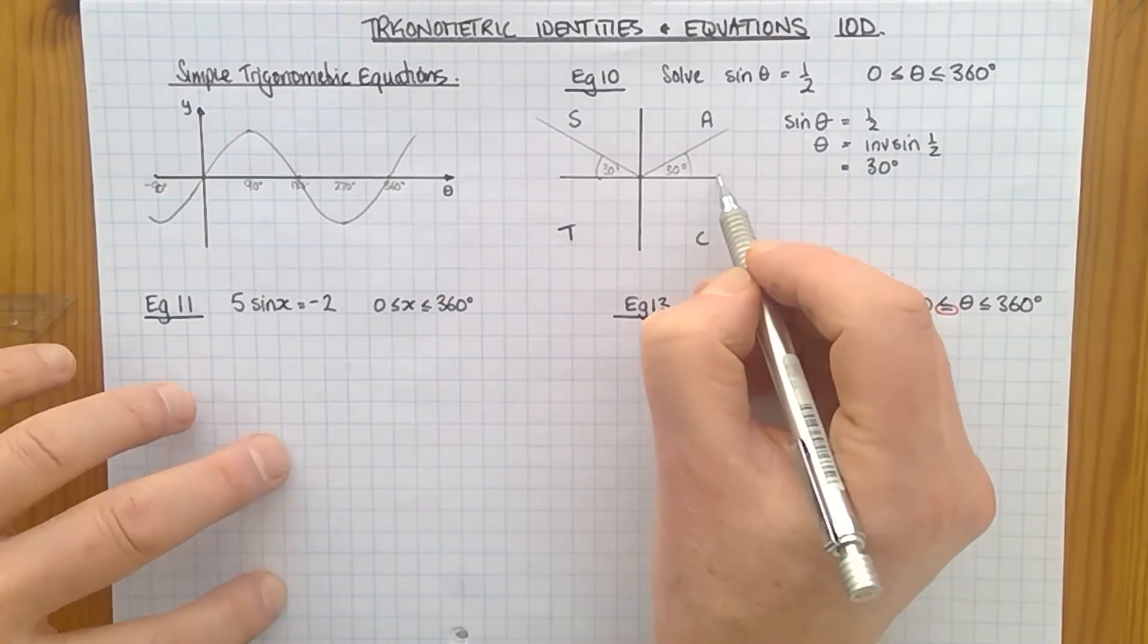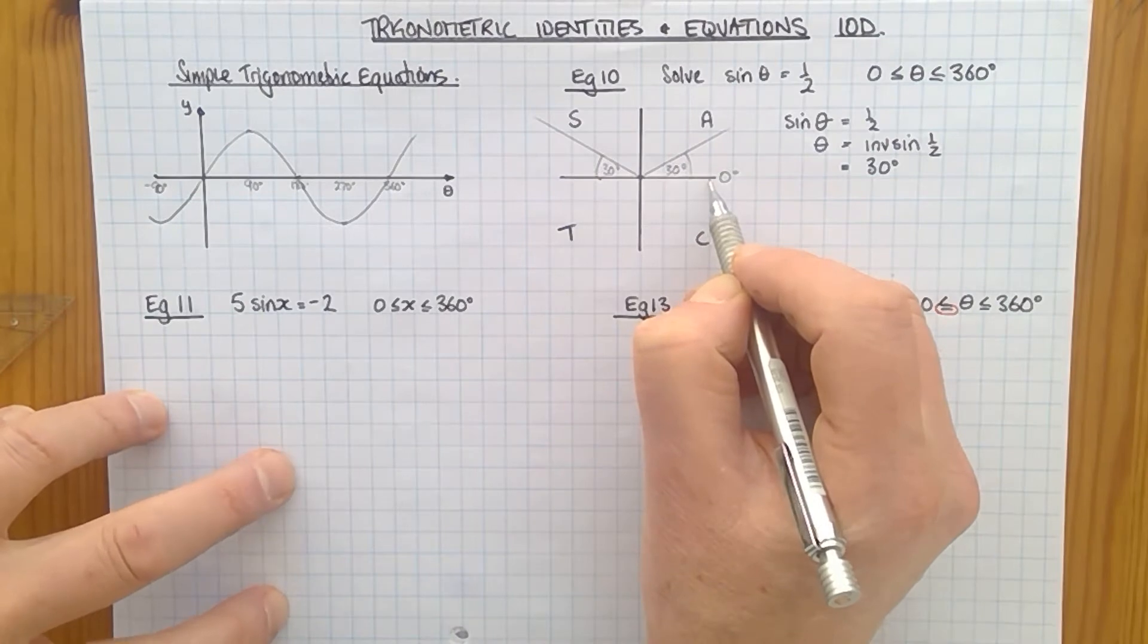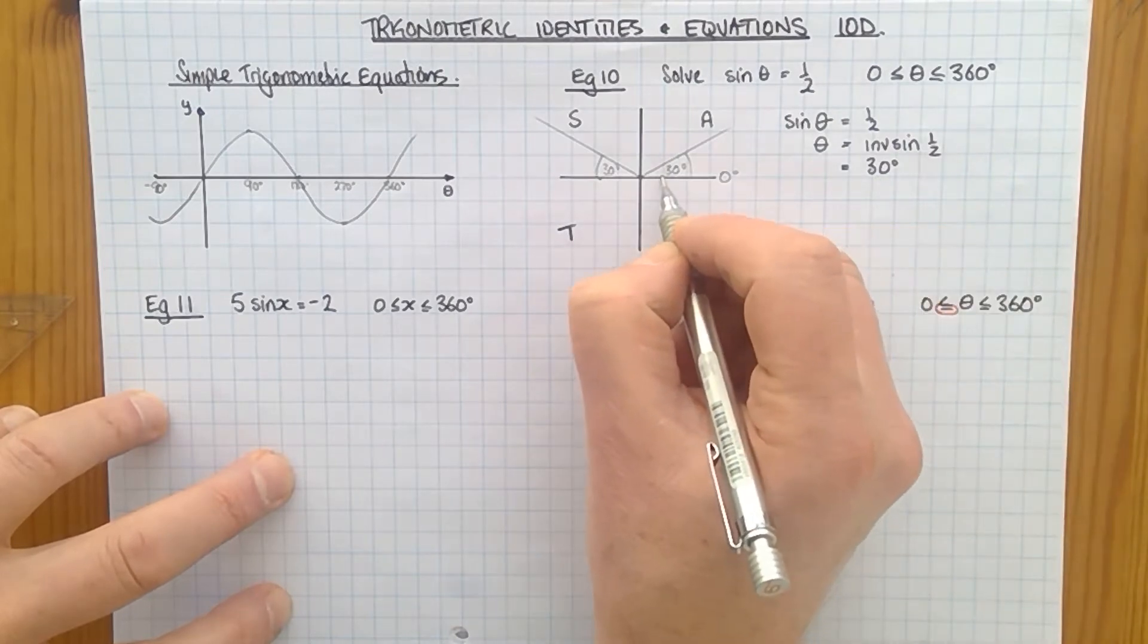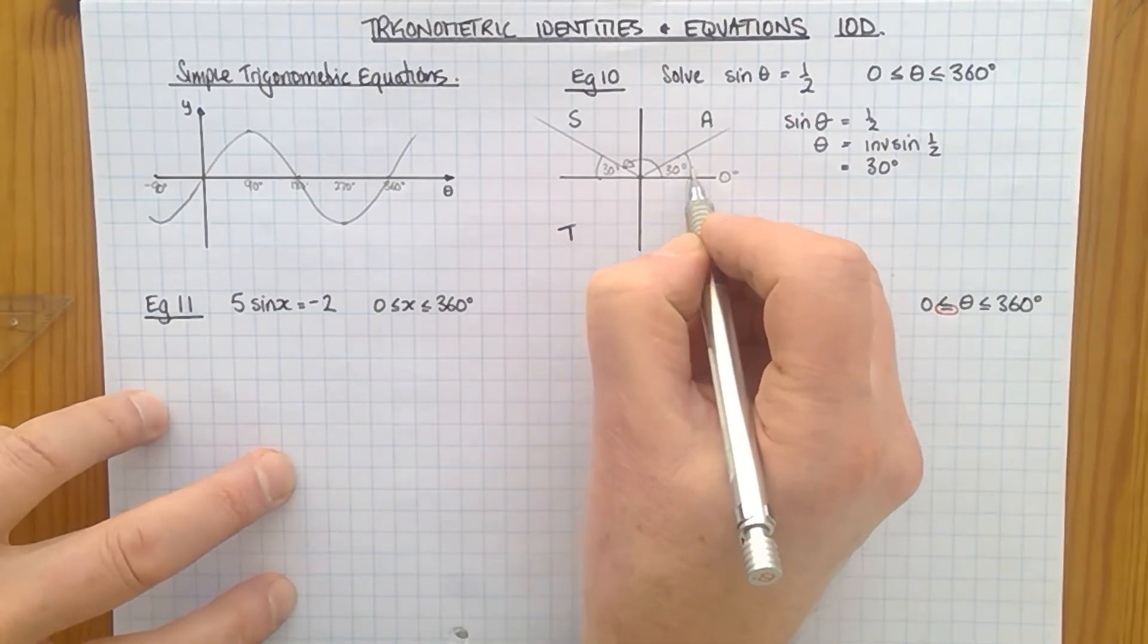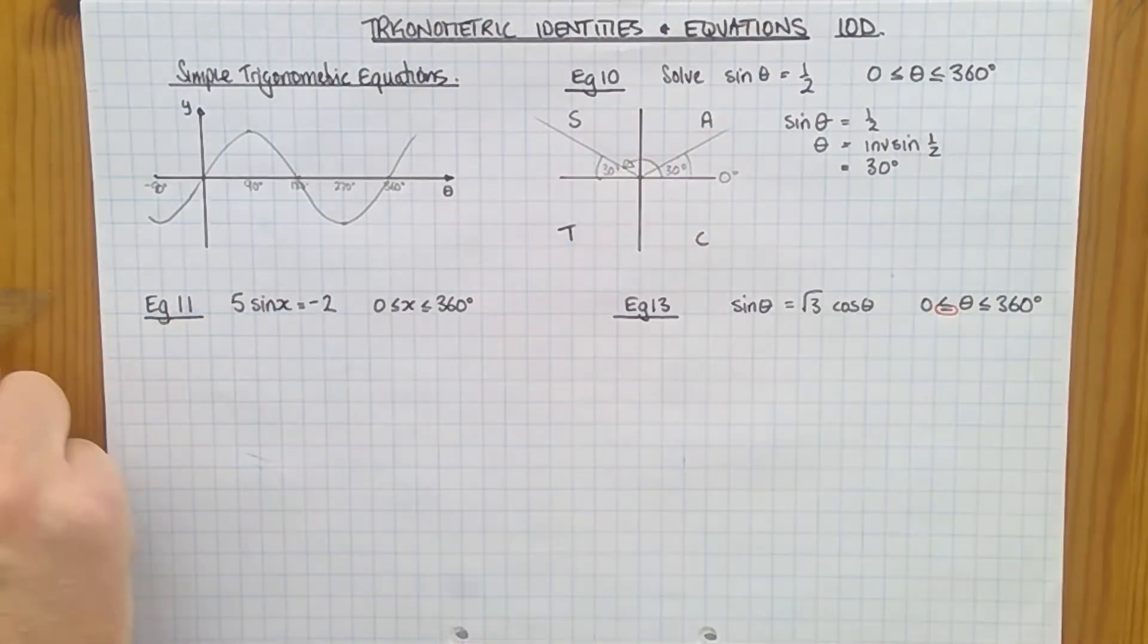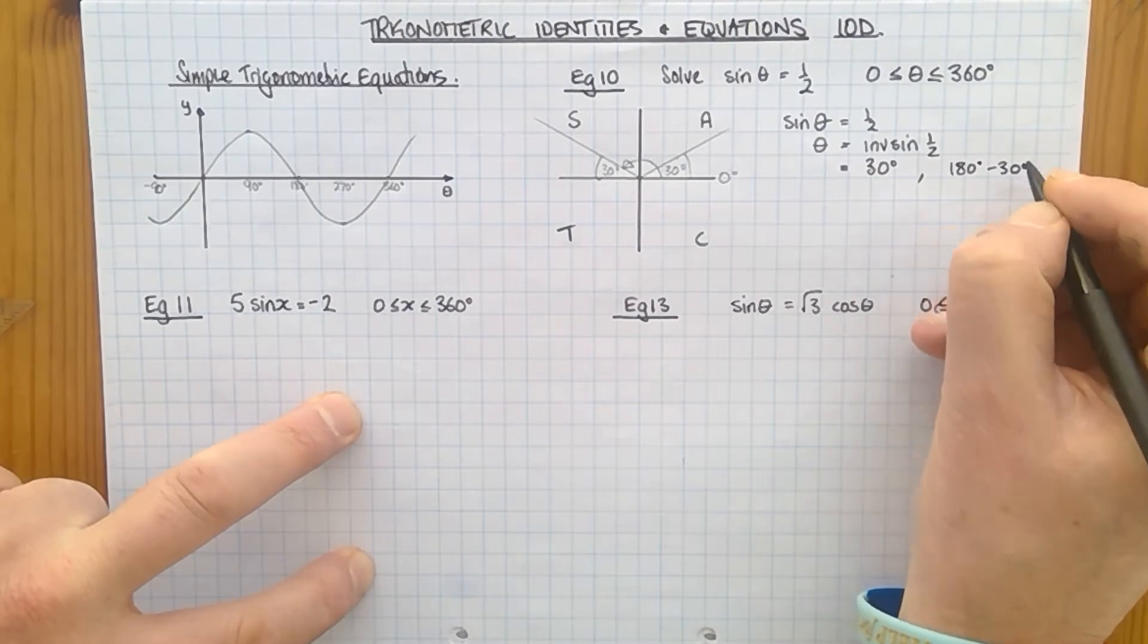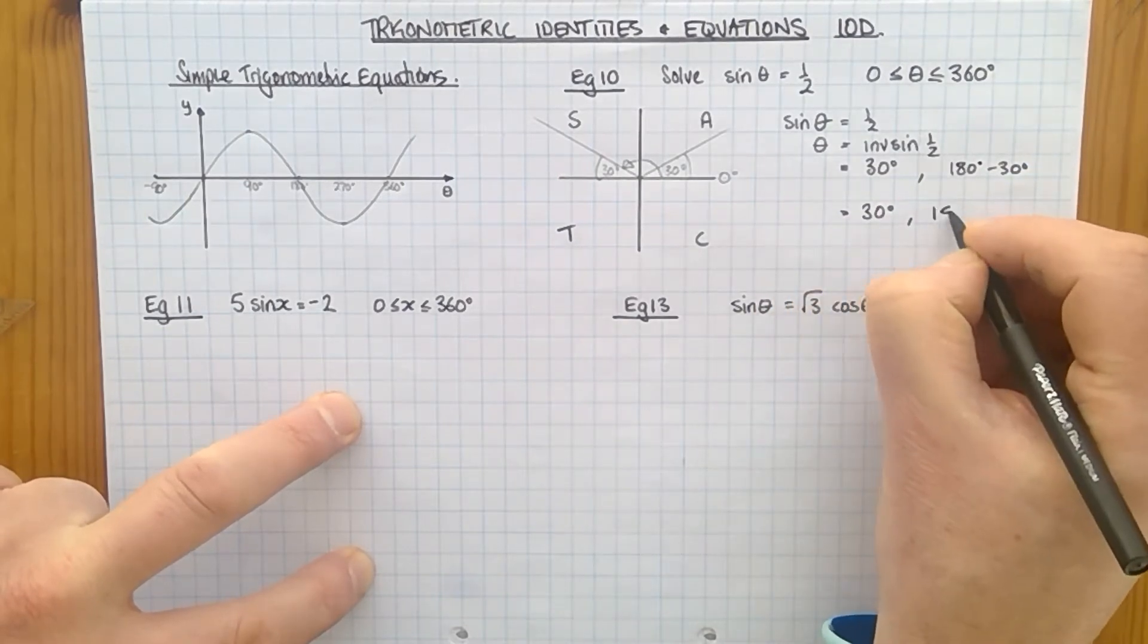So between 0 and 360, which is one complete revolution, we've got this value here, the primary value theta. But we also have that value. And that is 180 take away 30, which gives us the other value, which is 150.